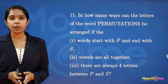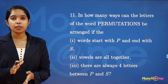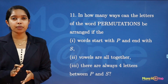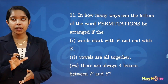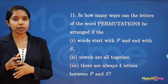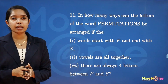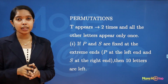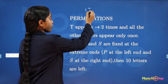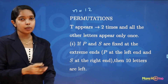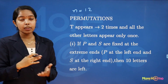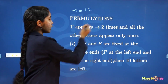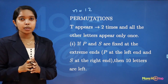In how many ways can the letters of the word PERMUTATIONS be arranged if: the word starts with P and ends with S; vowels are all together; there are always four letters between P and S? The word PERMUTATIONS has 12 letters in total. The letter T appears two times; all other letters appear once.